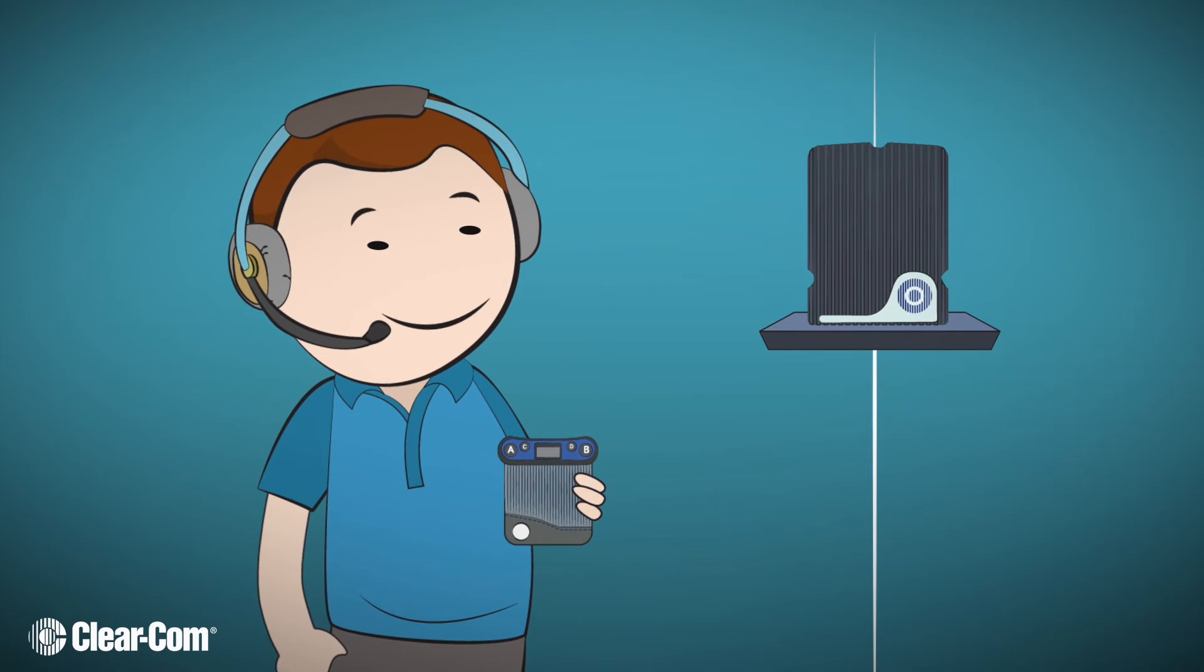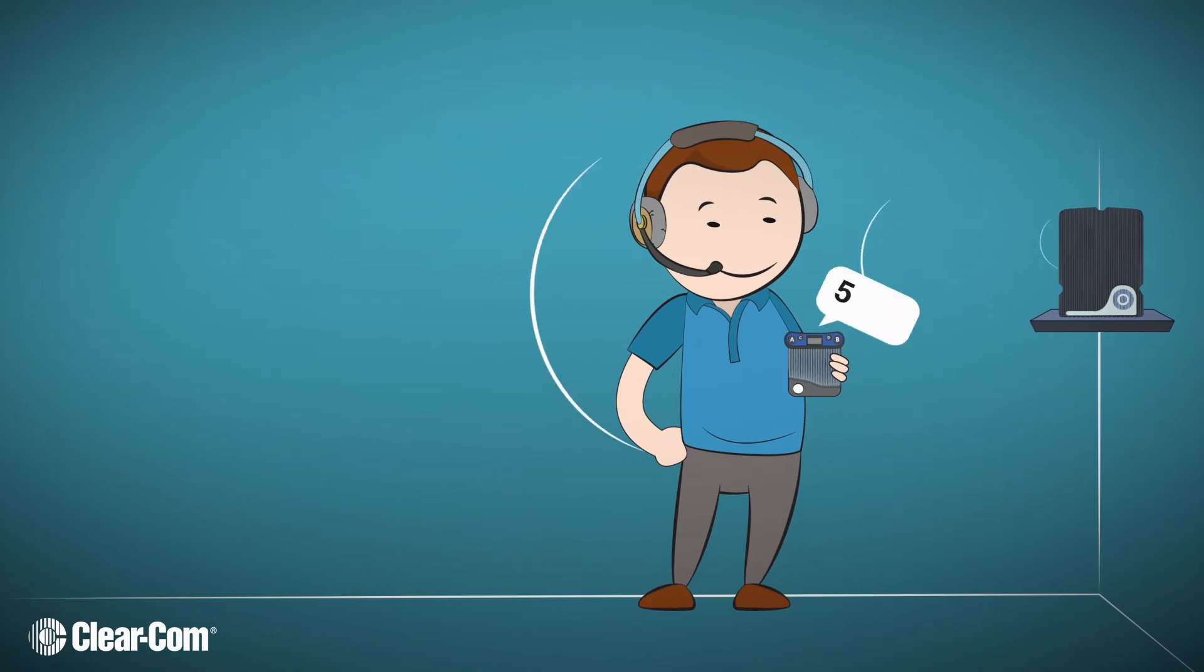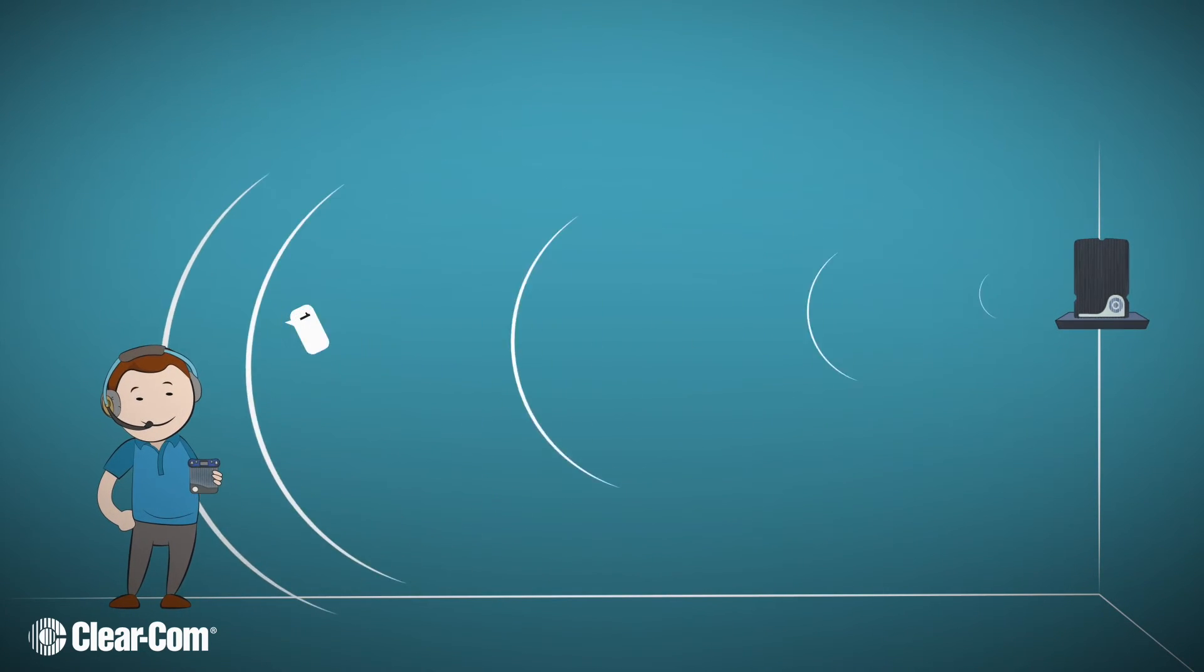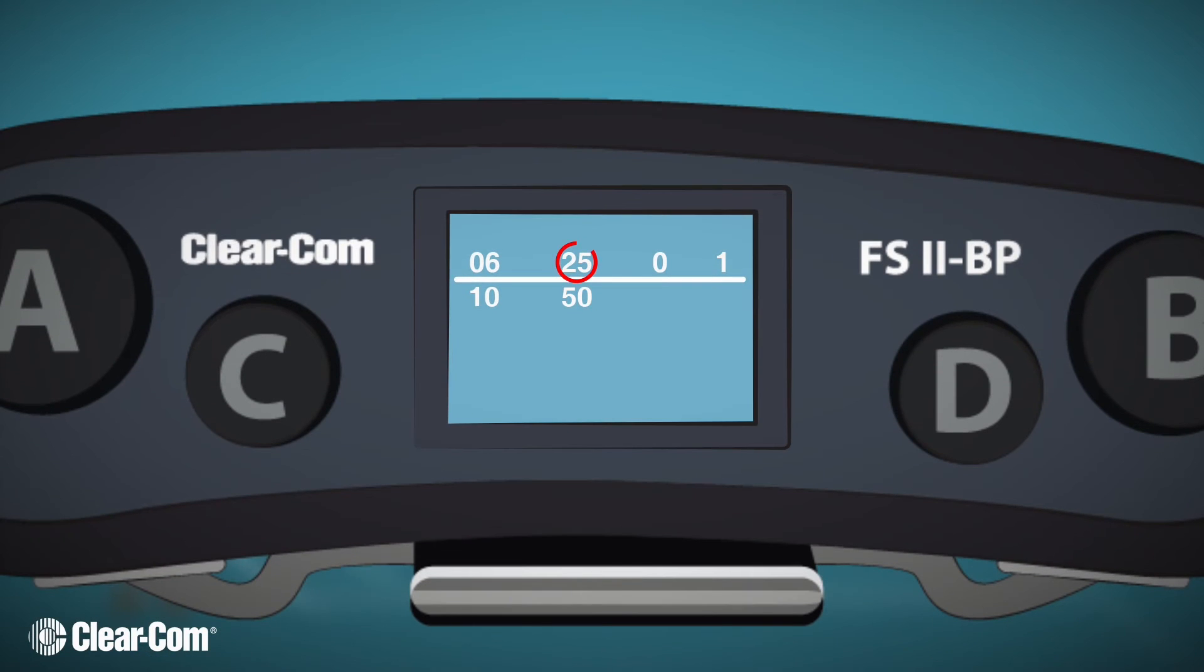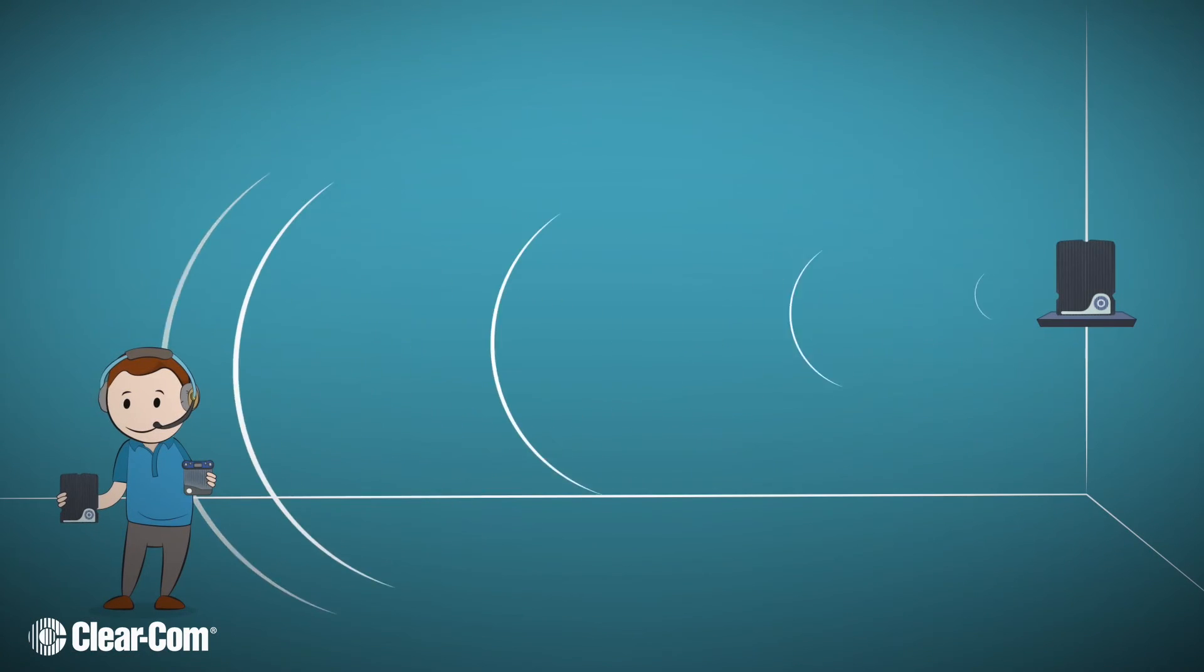With the belt pack showing the connection info screen, stand next to the transceiver and walk away to find the edge of the coverage zone. You're at the edge of the coverage zone once the belt pack readings get to an RSSI of 25 and more than 1% error rate when standing still. You should look to place another antenna in that location.